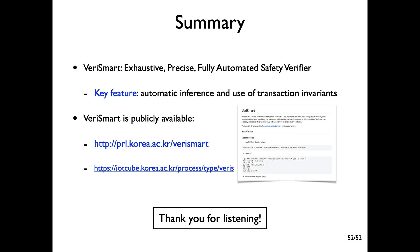To summarize, I presented VarySmart: an exhaustive, precise, and fully automated smart contract verifier. Its key feature is the capability of automatic inference and use of transaction invariants. With this feature, VarySmart overcomes the inherent limitations of existing analyzers. VarySmart is publicly available. Thank you for listening.